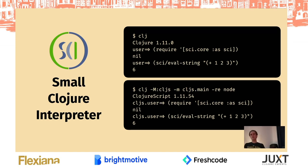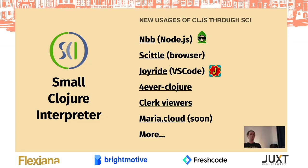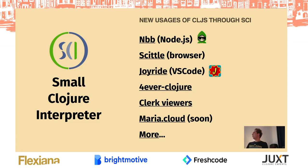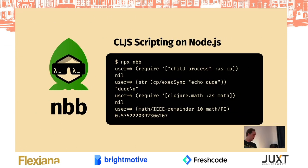Theoretically you could make a scripting tool like Babashka but for the JavaScript ecosystem — and that's what NBB became. NBB is short for Node Babashka. There are also some other tools you might not know about: Skittle and Joyride. There are also tools like 4Clojure, a static website where you can do Clojure exercises, and Clerk, a notebook library for Clojure where you can write viewer functions executed in your browser — also using SCI.